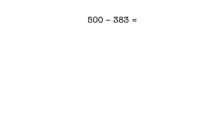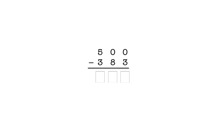Another example: five hundred minus three hundred eighty-three. First, we rewrite the problem in columns like this. As before, we line up the numbers so that the digits in each place of the first number are above the digits in the same place of the second number. In the ones place, we have zero minus three, so we need to take a ten from the tens place. But we have a zero in the tens place, which means we have to first take a one from the hundreds column to make ten tens before we can subtract.